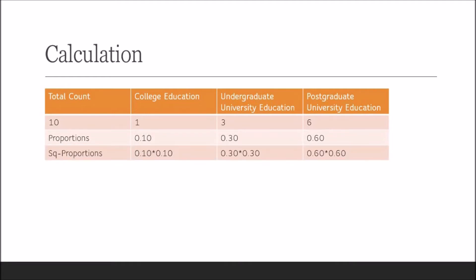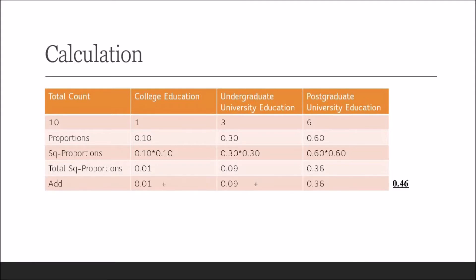The squared proportions are: for college education 0.01, for undergrad university education 0.09, and for postgrad university education 0.36. Now add these squared proportions: 0.01 plus 0.09 plus 0.36 equals 0.46.